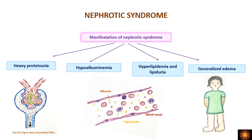The main manifestations of nephrotic syndrome are heavy proteinuria — loss of more than 3.5 grams per 24 hours — leading to hypoalbuminemia, hyperlipidemia, and lipiduria, all of which contribute to generalized edema.